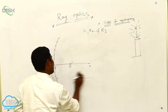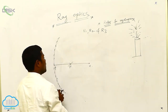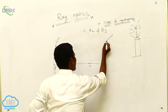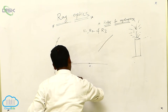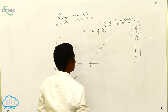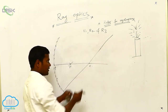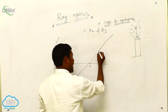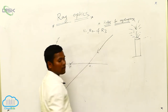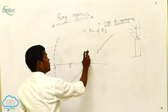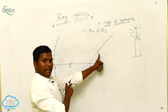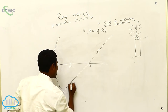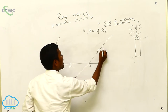R3 — the last one is R3. Sometimes the ray may pass through the center of curvature. So if it passes through the center of curvature, after striking on the mirror, it has to go back. This is R3: the ray passes through the center of curvature and reflects back through the same path.